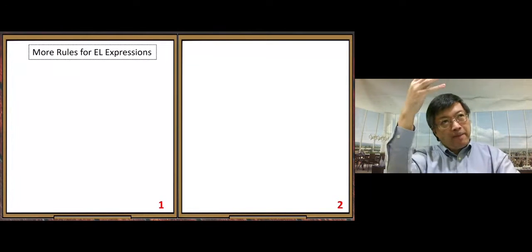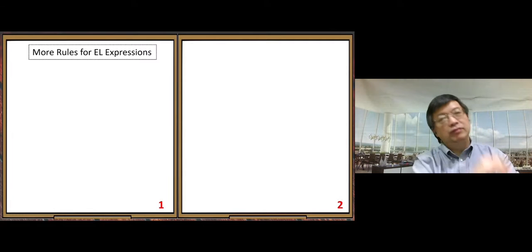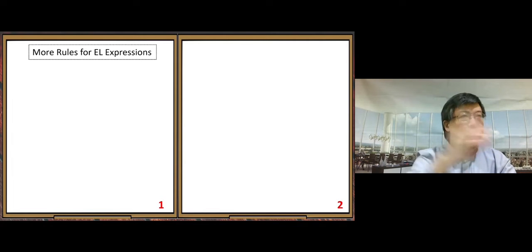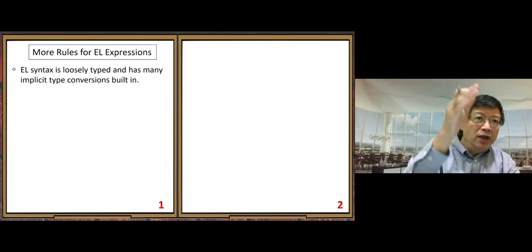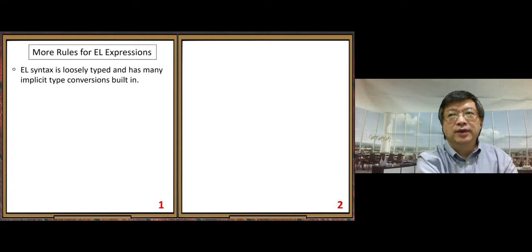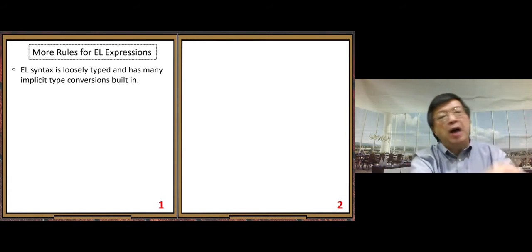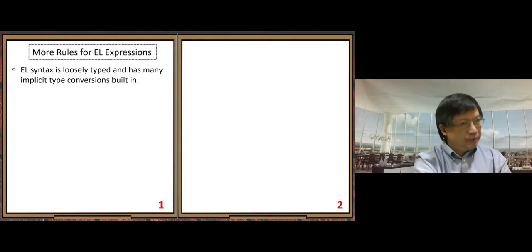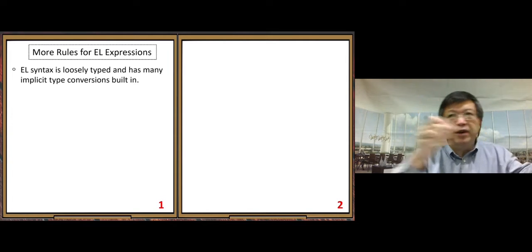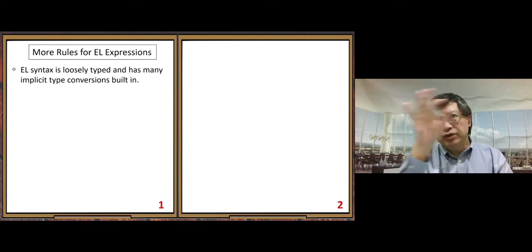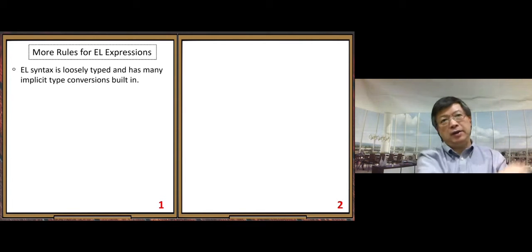Let's look at the special rules. Some rules are pretty general — general rules and special cases. First, EL syntax is loosely typed because there is a type issue. In Java we have different data types, but in EL we want to make the expression as simple as possible, so we do not have room to deal with types inside EL. For that reason there is some automatic type conversion — those conversion rules are hidden, but the conversions will happen automatically.